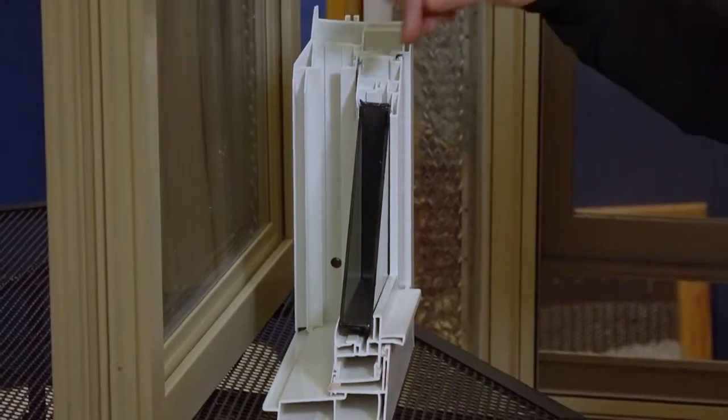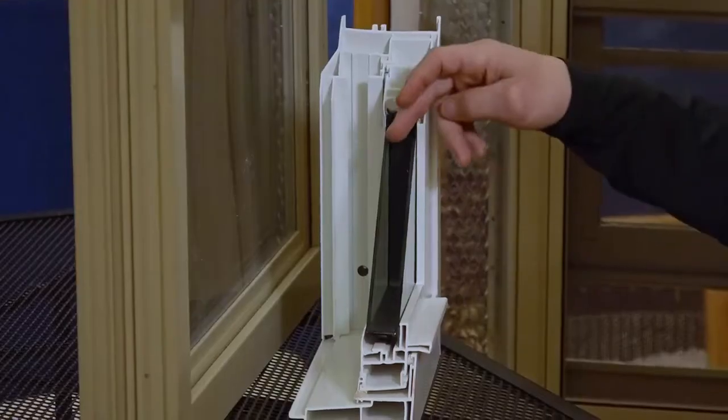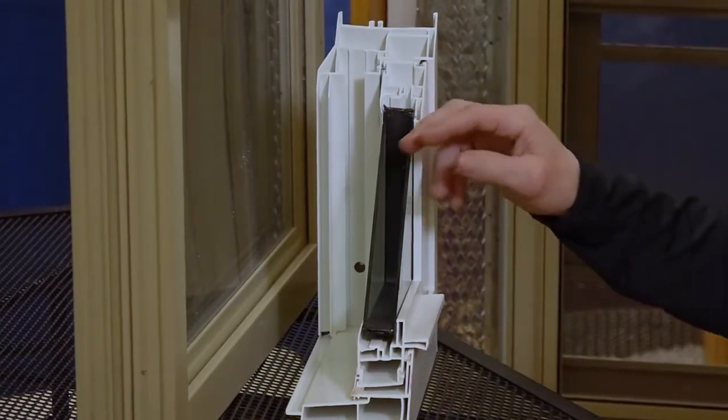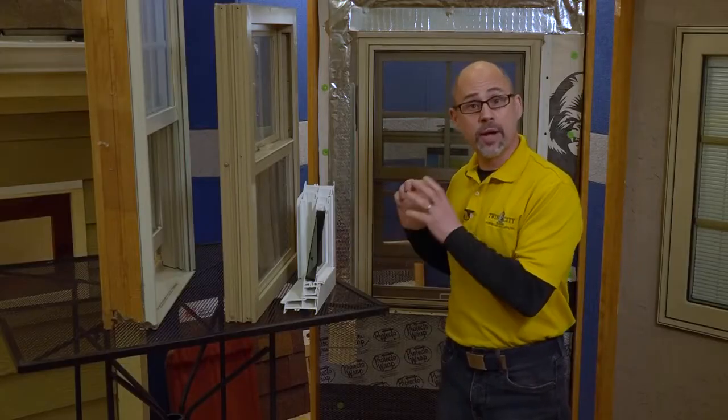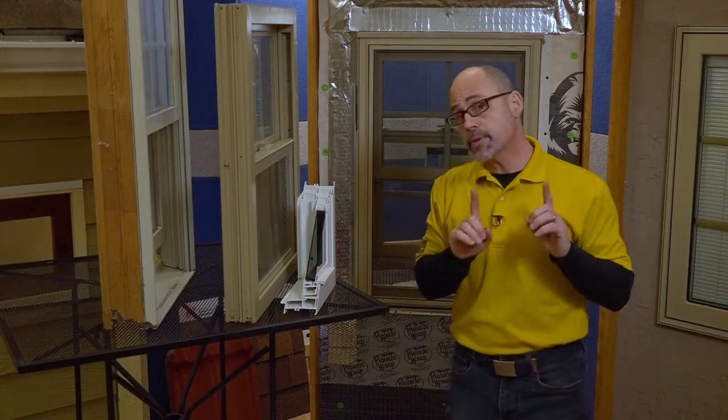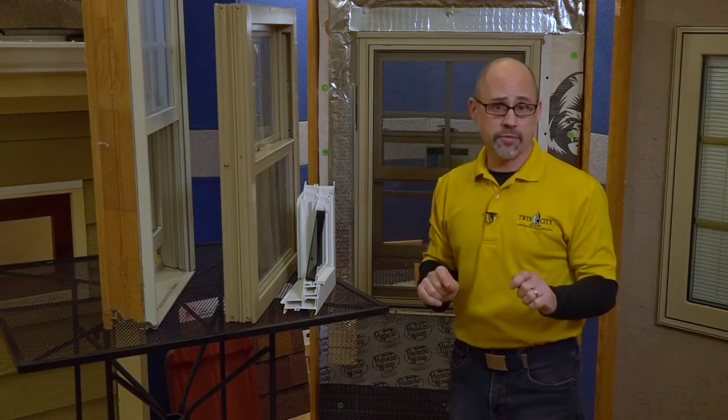These components, whether it's the butyl tape that helps to seal the frame to the glass or the inert gas that's applied in between the double panes of the glass, helps to provide the window with greater thermal resistance, thereby protecting your home against this region's harsh winter environment.